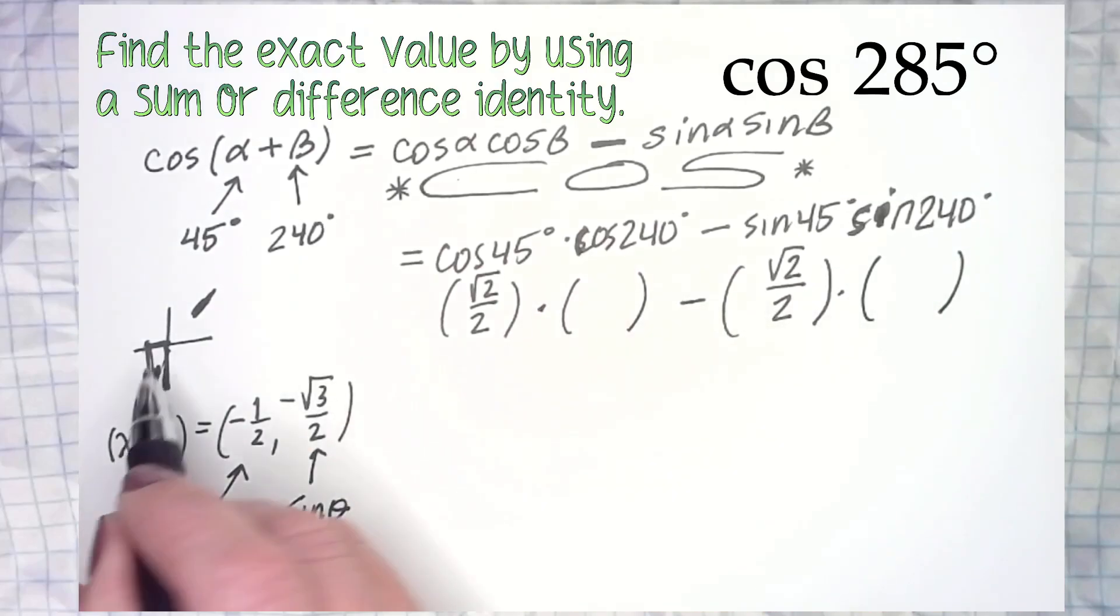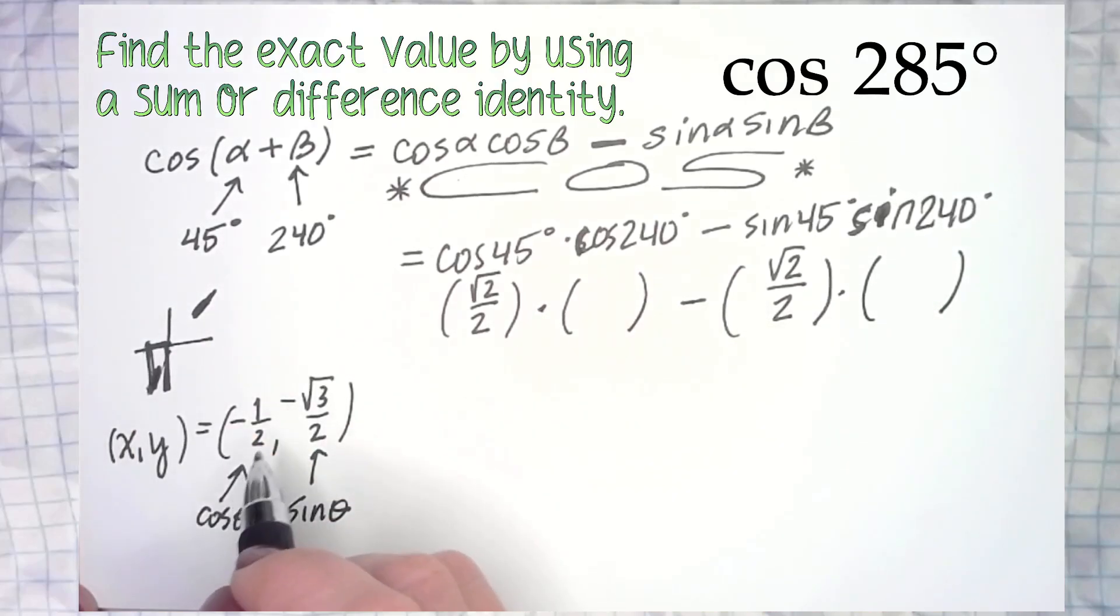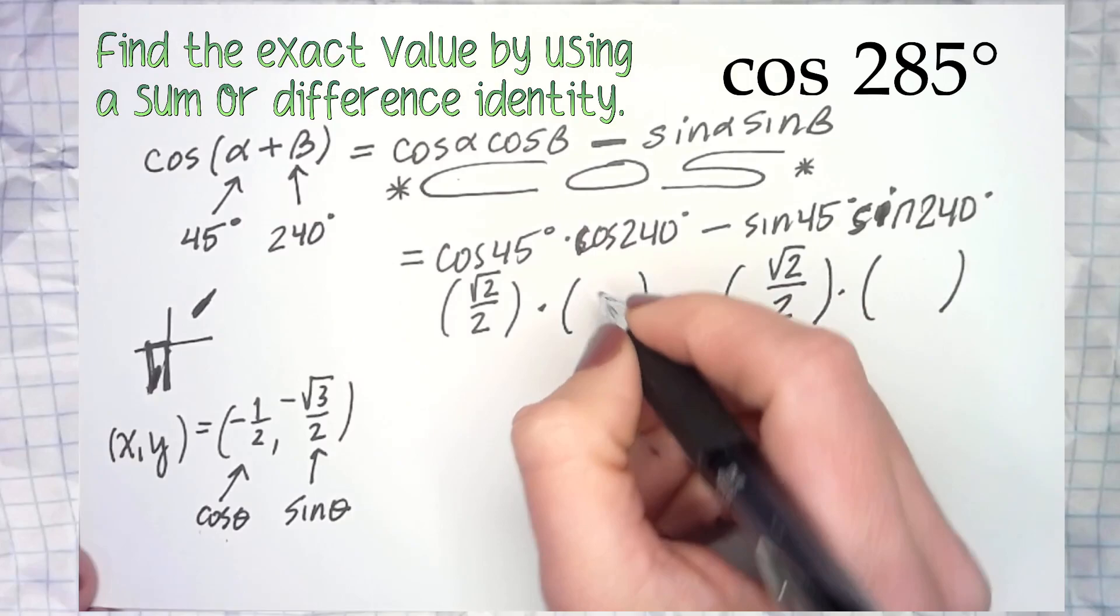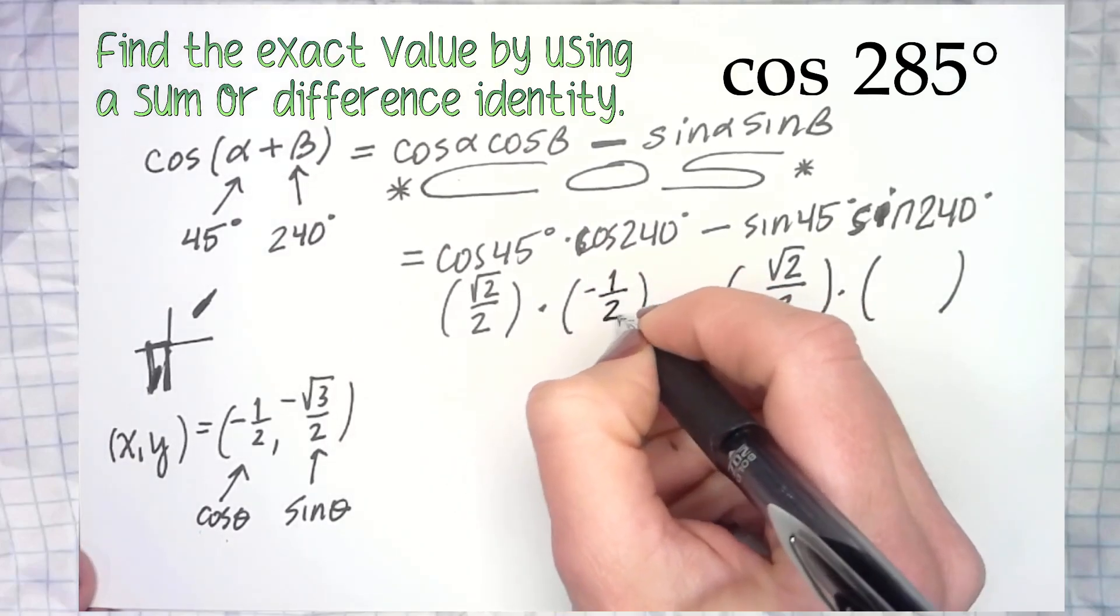We said it was over here - left, down - they're both negative. This over here is x, which is our cosine. This over here is y, which is our sine. So here I have negative one half, here I have negative root 3 over 2.